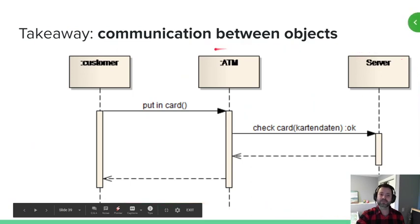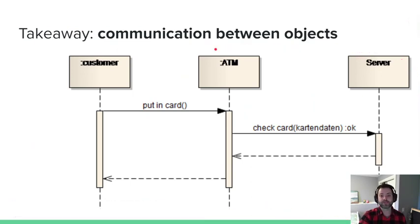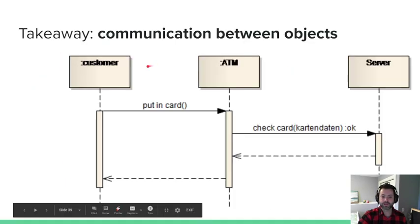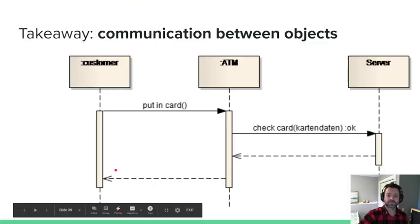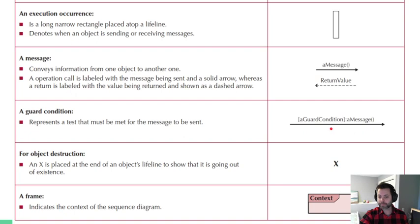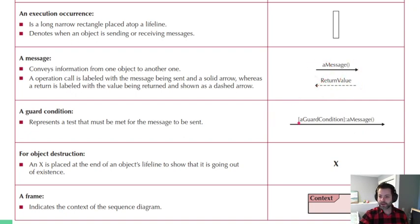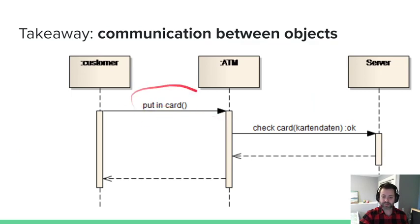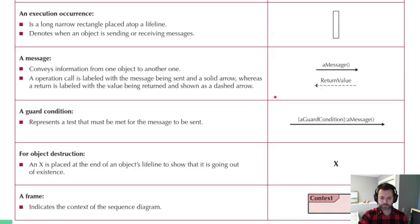The dashed lines going vertically are your lifelines. This is where this object is alive over time. And if the object gets killed off or destroyed, you put an X at the bottom. Only thing we didn't really talk about were guard condition and frames. So nothing that you've seen has had a frame. Basically, that would just be the boundary of the sequence diagram. What is the context of it?